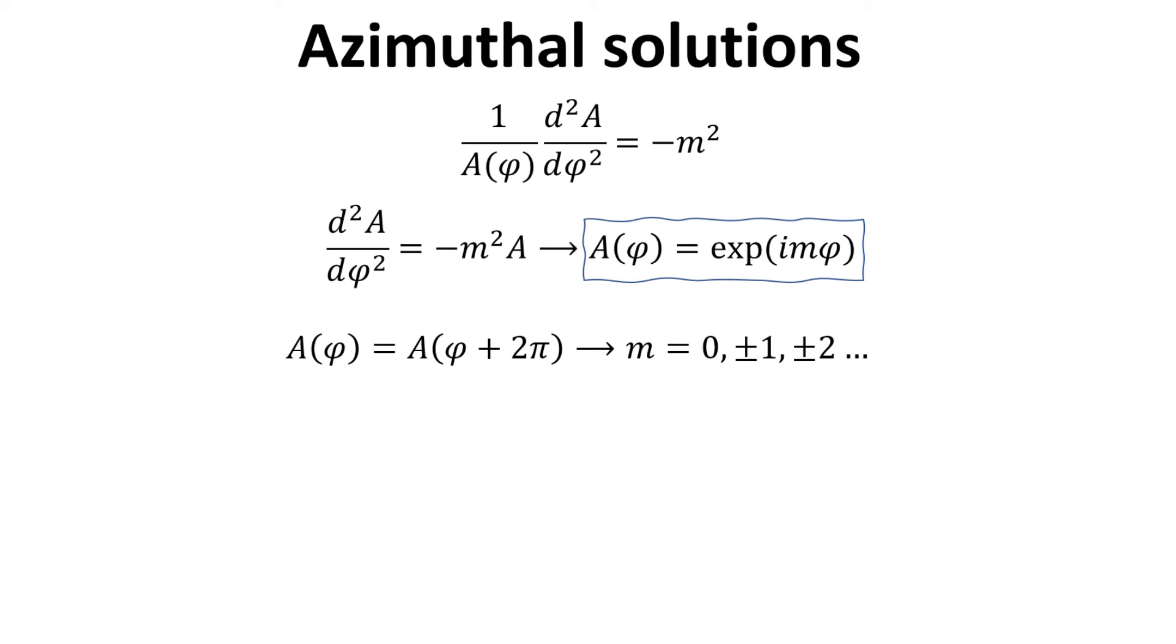The azimuthal equation is easy to solve. Its solution, A of phi, are simply the complex exponentials. It is a natural requirement that the function remains unchanged when the angle phi advances by 2 pi. Thus, this implies that m has to be an integer, which can either be positive or negative as shown, including zero.